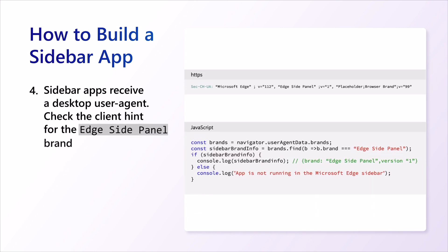And finally, you can detect when your app is being used within the sidebar to serve a tailored user experience. You could choose to, for example, build a custom variant or repurpose one that was designed for narrower mobile or tablet interfaces. Sidebar apps will receive a desktop user agent and you can inspect the client hint for the Edge side panel brand.